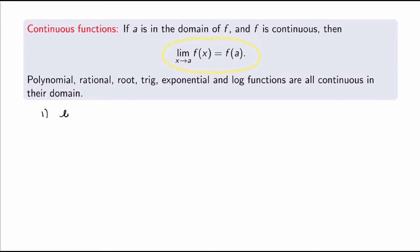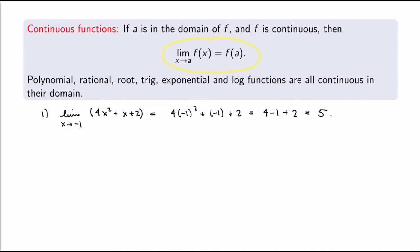For example, suppose you want to evaluate the limit as x goes to −1 of 4x² + x + 2. This is a polynomial function, so it is continuous — in particular continuous at x = −1. So I can evaluate the limit just by substituting x = −1: I get 4·(−1)² + (−1) + 2 = 4 − 1 + 2 = 5. That was a lot faster than using the limit laws.